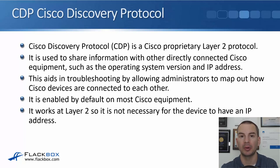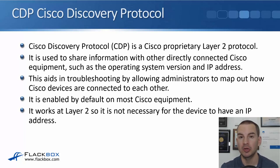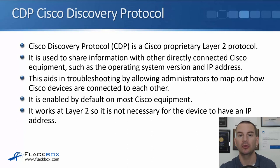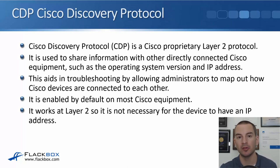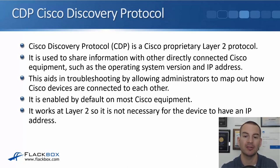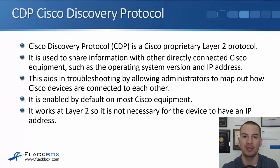CDP is enabled by default on most Cisco equipment — not just on routers and switches, but also on firewalls, and even things like software such as Cisco Unified Communications Manager, which is used to control IP phones, and even the IP phones themselves will run CDP. So if you go on to a switch which has got the Cisco Unified Communications Manager server and IP phones plugged in, you'll be able to get information about those devices. CDP works at layer 2, so it's not necessary for the device to have an IP address for it to be detected by its neighbors.